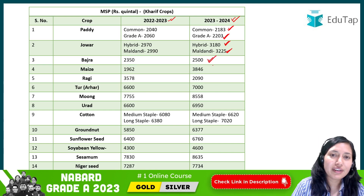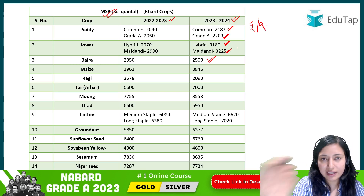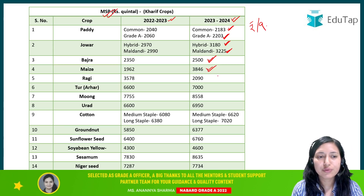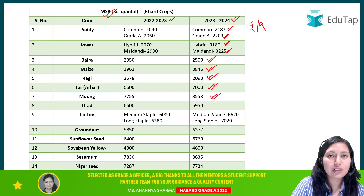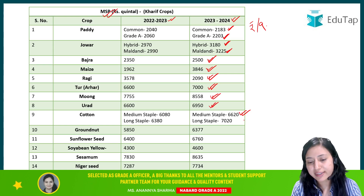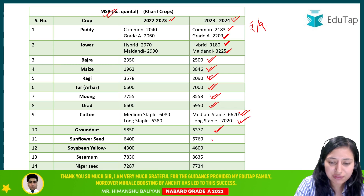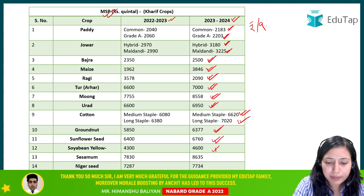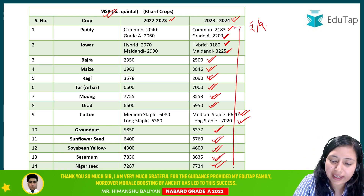MSP is given in rupees per quintal. For maize it is ₹3,846. For ragi it is ₹2,090 (note: likely ₹3,846 was maize; ragi is stated as 2,090 in the transcript). For tur (arhar) it is ₹7,000, for moong it is ₹8,558, for urad it is ₹6,950. For medium staple cotton it is ₹6,620, and for long staple cotton it is ₹7,020. For groundnut it is ₹6,377, safflower seed is ₹6,760, yellow soybean is ₹4,600, sesame is ₹8,635, and niger seed is ₹7,734.